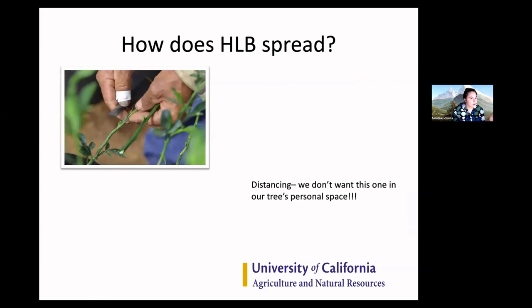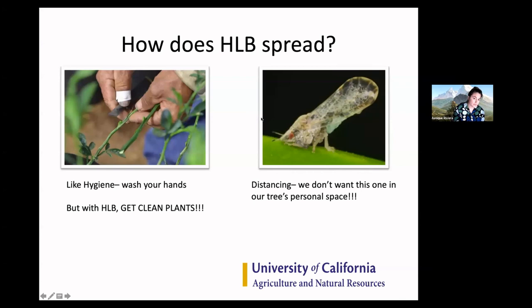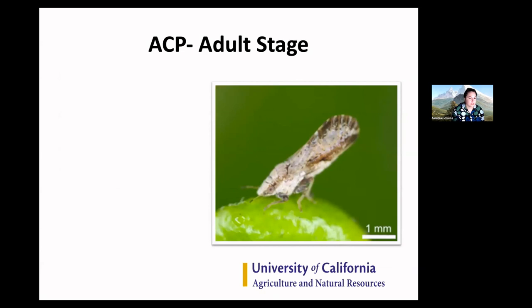Back to HLB spreading — we know grafting is a vector. Similar to COVID-19, making sure that you have clean plants is essential. The Citrus Clonal Pest and Disease Program is a great place to access cuttings and budwood to get clean plant material. When it comes to distancing, we want to distance ourselves from psyllids — they're basically really tiny insects, almost like fleas. With each psyllid, you pose a risk that it may contain HLB, so preventing psyllids is the front line of defending your tree against HLB.